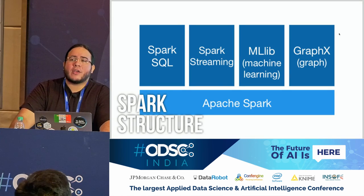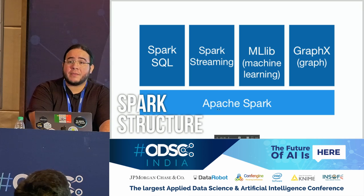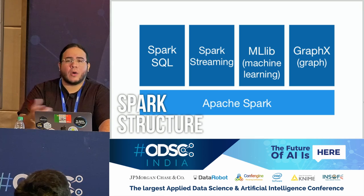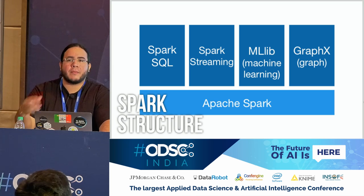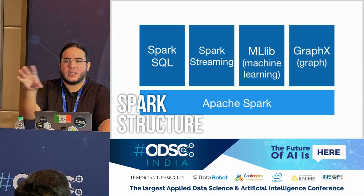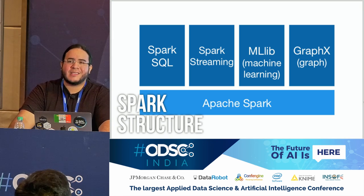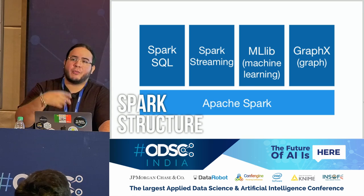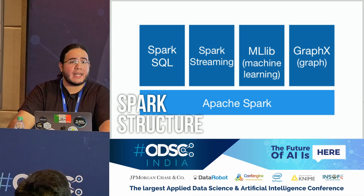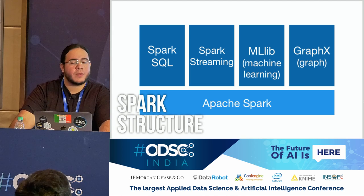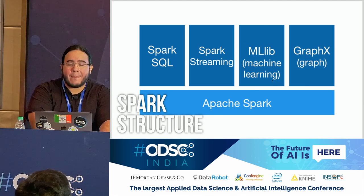Spark has a core created mostly in Scala that has all the instructions to transform your data in a distributed fashion. It has several components that are very important: Spark SQL to distribute your SQL code in a cluster, Spark Streaming to work with streaming data, MLlib to work with machine learning, and GraphX to work with graphs. We're going to focus today on MLlib.